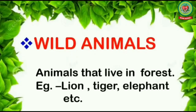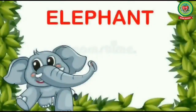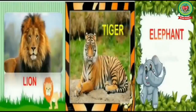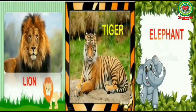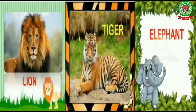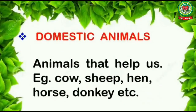Our next term is wild animals — animals that live in the forest. Examples: lion, tiger, elephant, etc. Lion is the king of the jungle. Tiger and elephant are also big in size and are wild animals that live in the jungle or forest. Can we keep a lion or a tiger as a pet? No, because they are dangerous animals that can harm us.